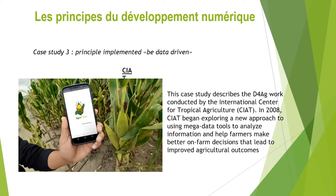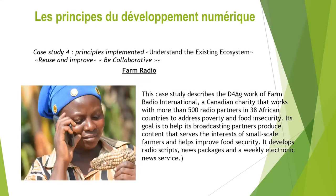The third case study is CIAT, the Center for Tropical Agriculture. The principle implemented was being data driven — which has been constant across all three case studies so far. In 2018, CIAT began exploring a new approach to using big data tools to analyze information and help farmers make better on-farm decisions that lead to improved agricultural outcomes. Please download the Aggrove Tutor app and see how CIAT implemented this principle of being data driven.